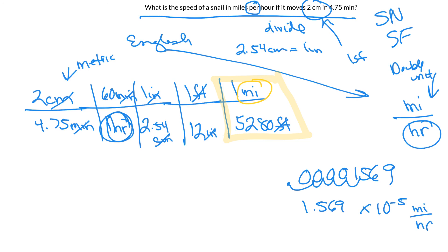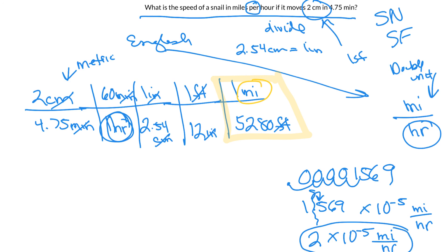I only have one sig fig, so I have to round. I look to the right of where I'm rounding — is that number five or greater? Yes, so I round up, and my answer is 2 times 10 to the minus fifth miles per hour. That is how slow my snail is going. That's how you do a double-unit to double-unit factor labeling problem. Hope that's been helpful and I'll see you in class.